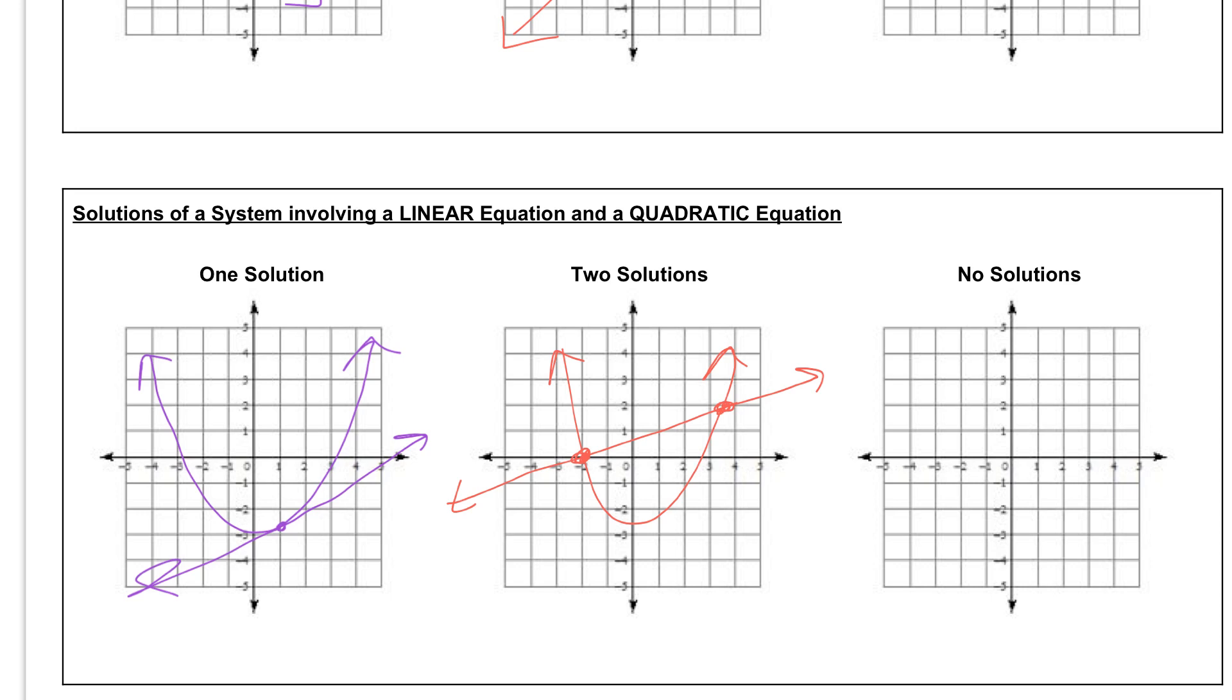And finally, we could have no solutions. No solution would be something where maybe we have our line up here and our quadratic that's going this way, where our quadratic will never touch that line. If you have questions on this let me know. Otherwise you can move on to the next example.